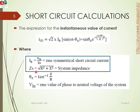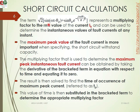This is the RMS value of the phase-to-neutral voltage. The term in brackets — root 2 into sin(ωt − θz) plus sin(θz) × e^(−ωr/X) — represents a multiplying factor to the RMS value of current IK, and can be used to determine the instantaneous value of the fault current at any instant.